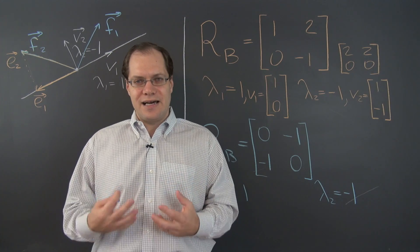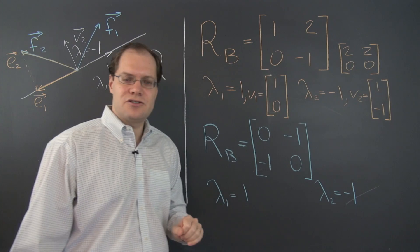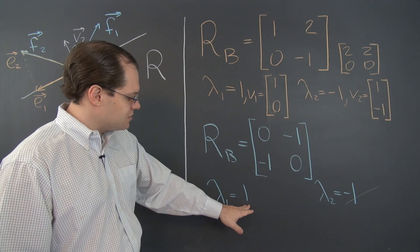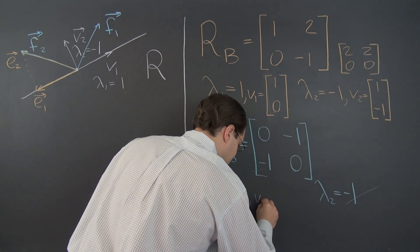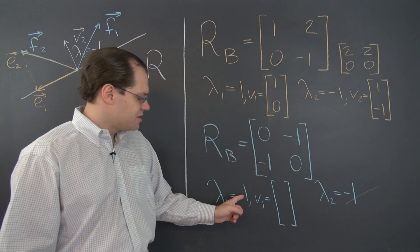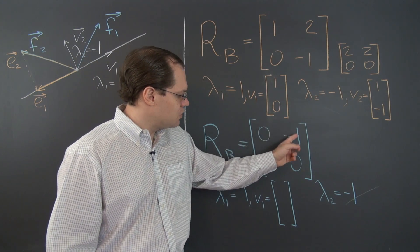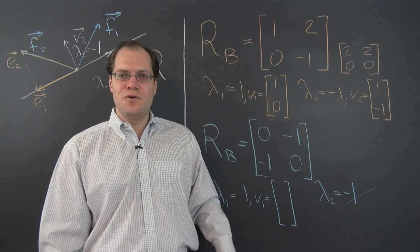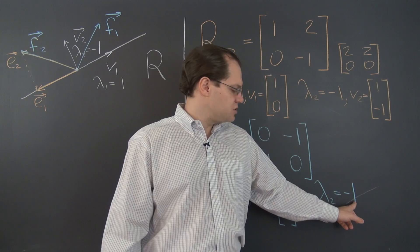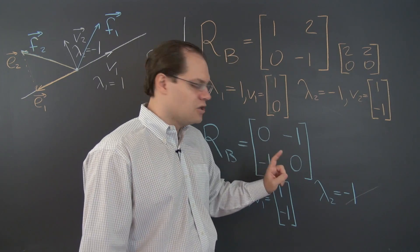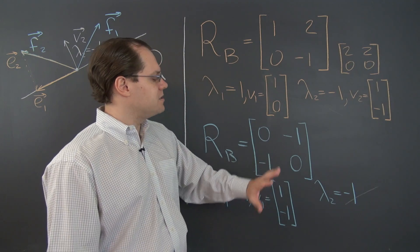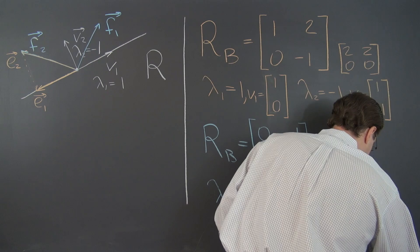Now let's calculate the corresponding eigenvectors — they will be completely different from before but should translate to the same actual eigenvectors. For eigenvalue negative 1, subtracting negative 1 from the diagonal results in the matrix with entries negative 1, negative 1, negative 1, negative 1, so the corresponding eigenvector V1 is (1, negative 1). For eigenvalue 1, subtracting 1 from the diagonal gives (1, negative 1, negative 1, 1), and the null space of that matrix is (1, 1) — so that is V2.